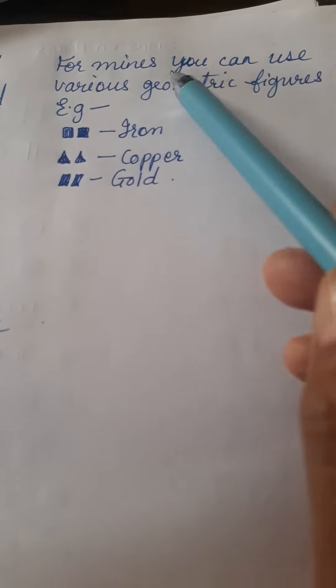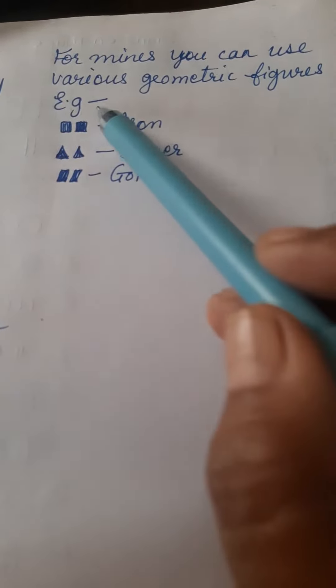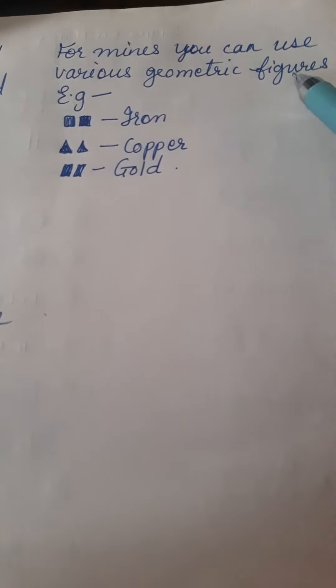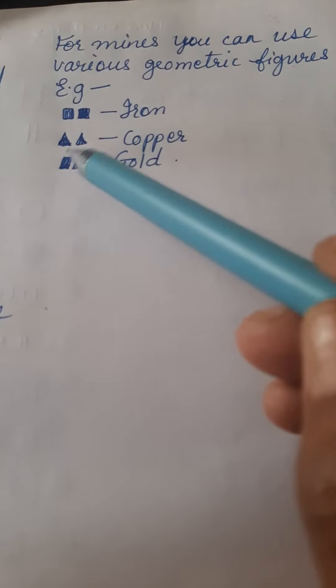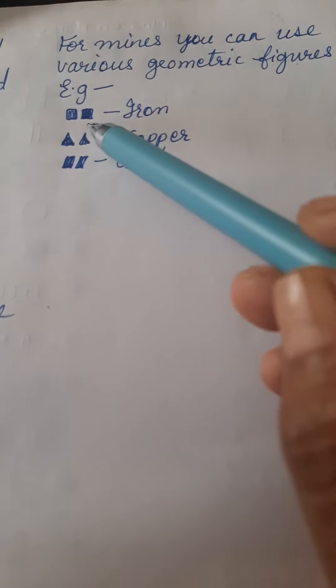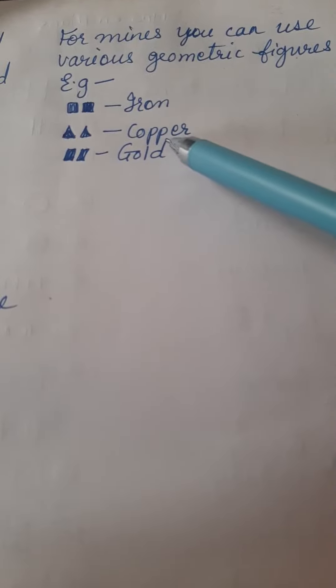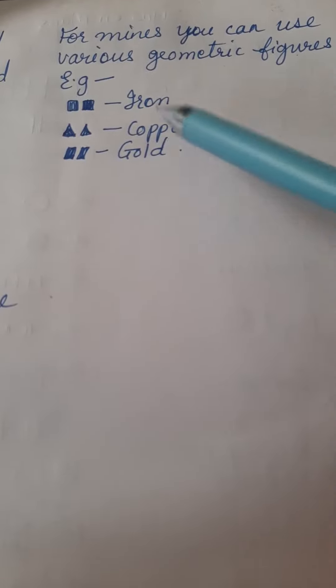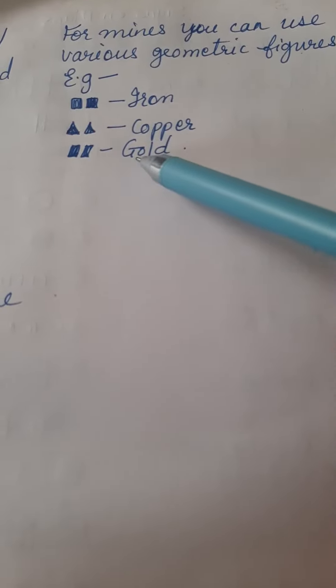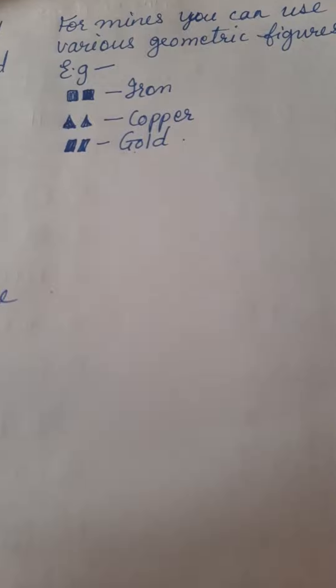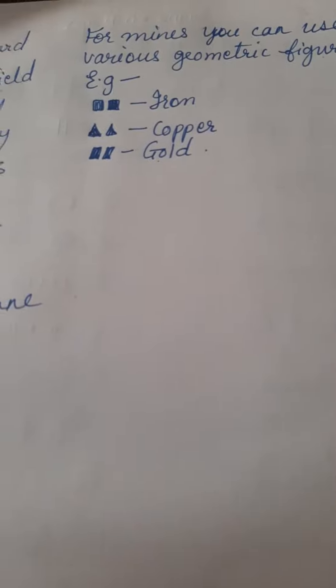For mines, you can use various geometric figures. For iron, you can show squares. For copper, you can show triangles. For gold, you can show some other shapes.